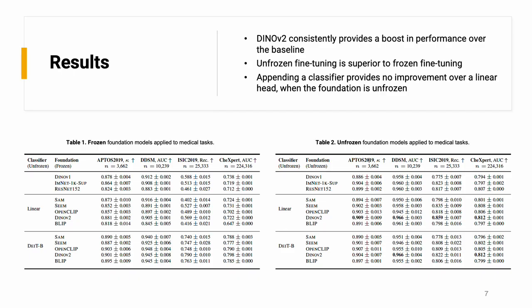Moving on to the results: DINOv2 outperforms all other models and the baselines when fine-tuned. Notably, appending a ViT classifier versus just using a linear head doesn't really make a difference. Apart from that, SIM matches the performance of the baselines, while the other models lag behind.